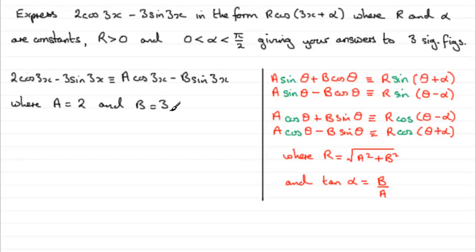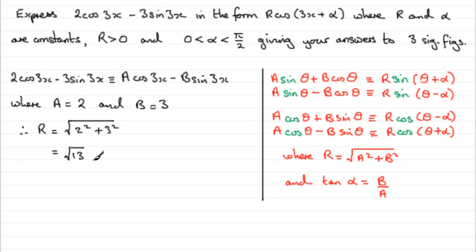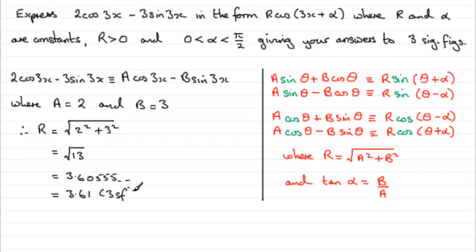Knowing that, we can say that r equals the square root of a squared plus b squared, so that's √(2² + 3²) = √(4 + 9) = √13. Normally we'd leave it like that, but in this particular question they've asked us to give it to 3 significant figures. If you square root 13 you get 3.60555..., which to 3 significant figures is 3.61. So that's r.